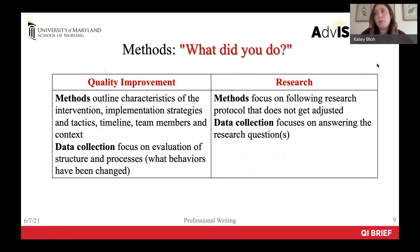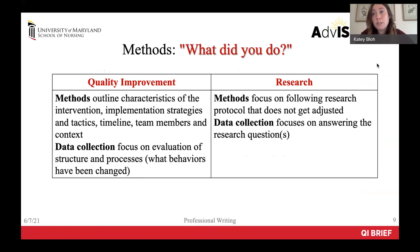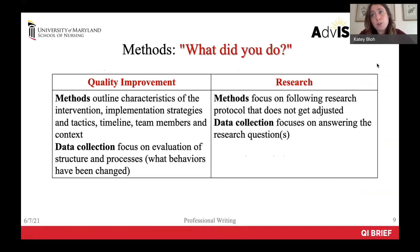Here are some examples of the focus in quality improvement versus research for the sections of methods and data collection. Inclusion and exclusion factors, sample or N sizes, can be used in both QI and research methods sections. Quality improvement methods outline characteristics of the intervention, implementation strategies and tactics, timeline, team members, and context. Research methods focus more on following a strict research protocol that does not get adjusted. Data collection in QI focuses on evaluation of structures and processes — essentially on what behaviors have changed — while in research, data collection focuses on answering the specific research question.